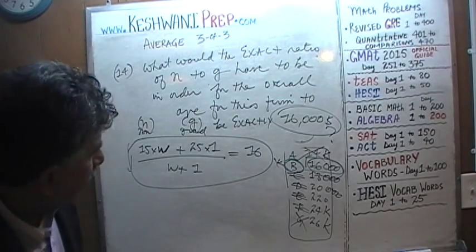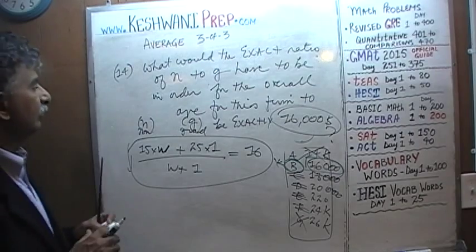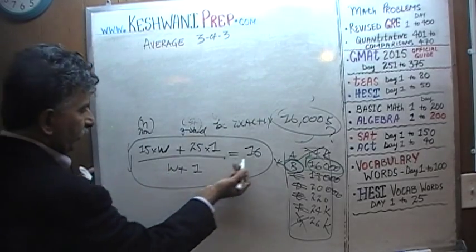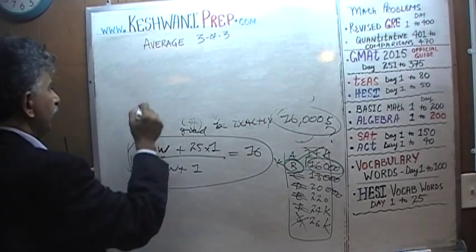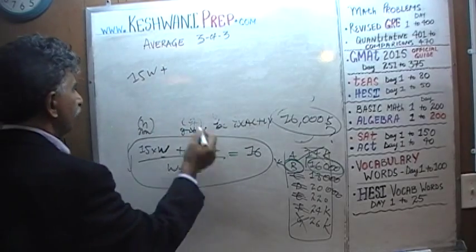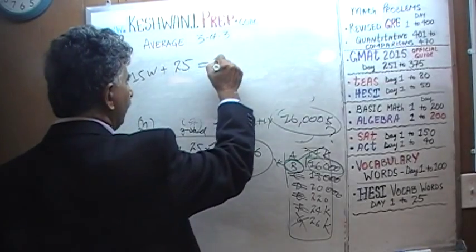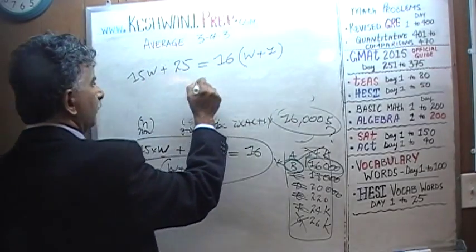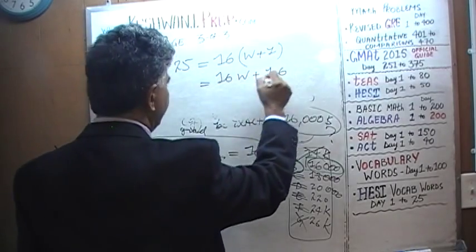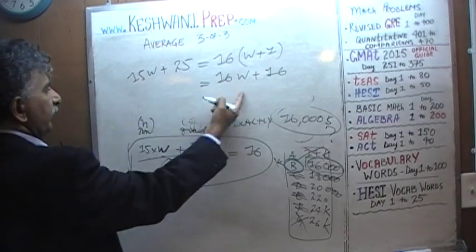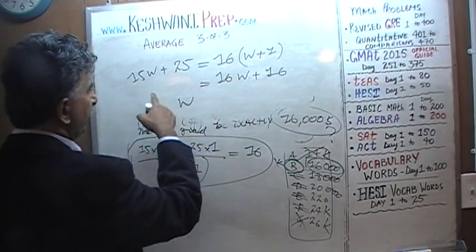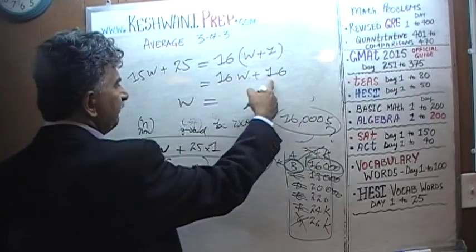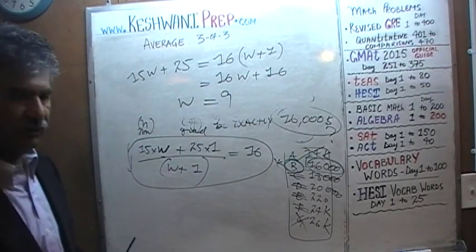It's a very simple, straightforward equation. Solving: multiply both sides by (W + 1) to get 15W + 25 = 16(W + 1), which gives 15W + 25 = 16W + 16. Bringing W to one side: 25 − 16 = 16W − 15W, so W = 9.